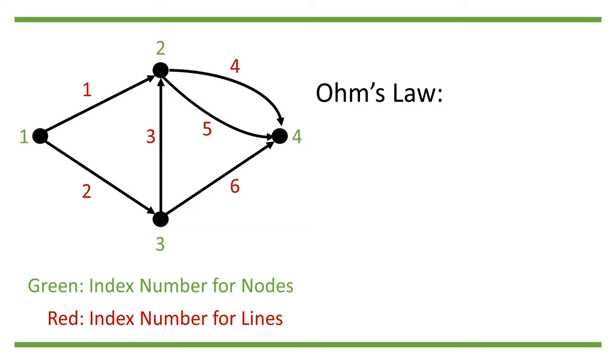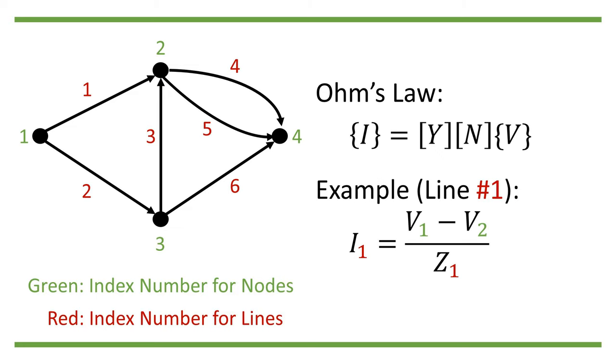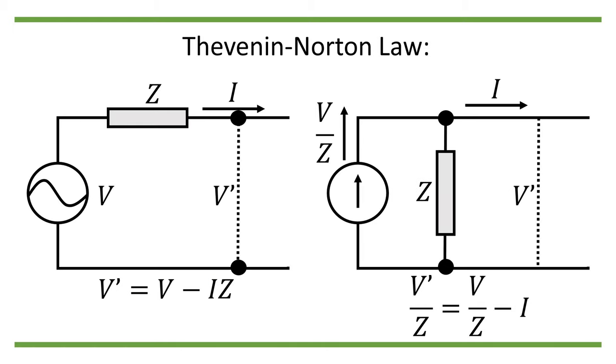We can write Ohm's law as I equals YNV, where V is the voltage at each node. Note that only on the nodes can there be voltage values assigned. So if there is a battery or any other types of voltage source on the line, we need to change it into an equivalent current source with Thevenin-Norton law.